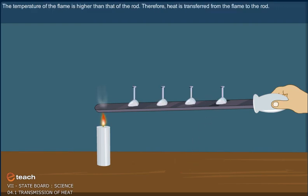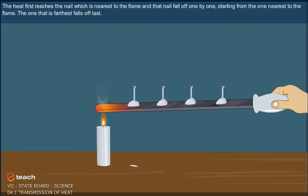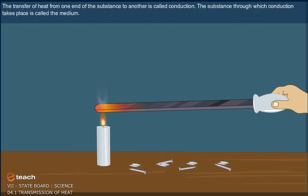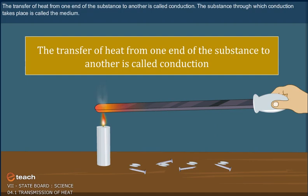The temperature of the flame is higher than that of the rod. Therefore, heat is transferred from the flame to the rod. The heat first reaches the nail which is nearest to the flame and that nail falls off one by one. Starting from the one nearest to the flame, the one that is farthest falls off last. The transfer of heat from one end of the substance to another is called conduction.